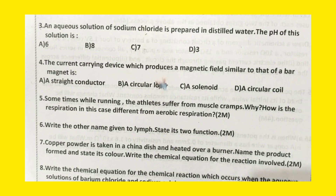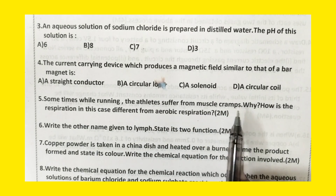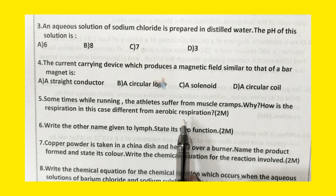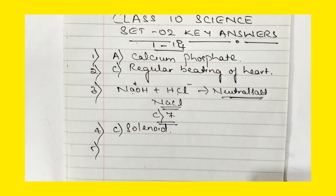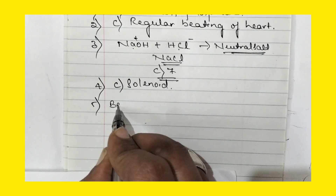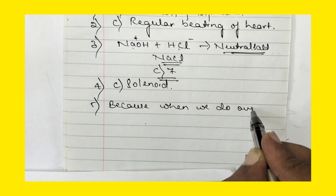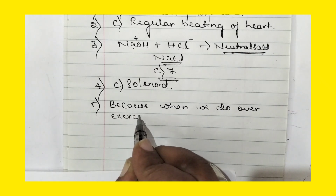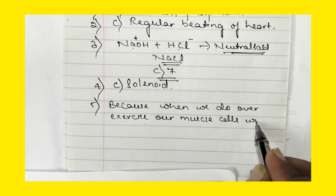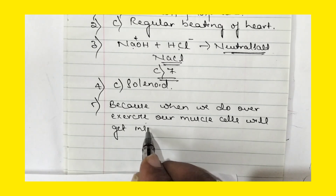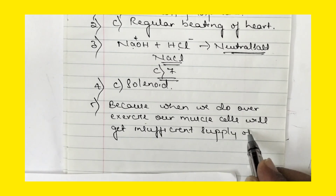Now question number 5: sometimes while running, the athlete suffers from muscle cramps. Why? How is the respiration in this case different from aerobic respiration? When we do over-exercise, our muscle cells will get an insufficient supply of oxygen.